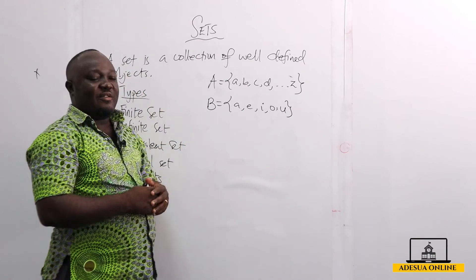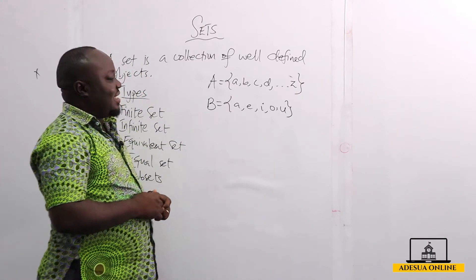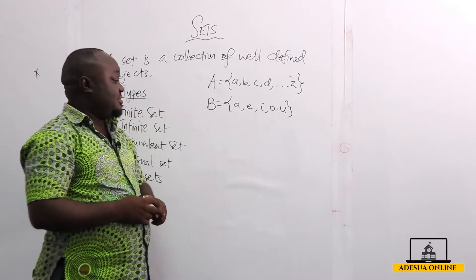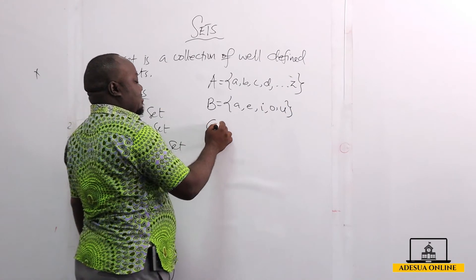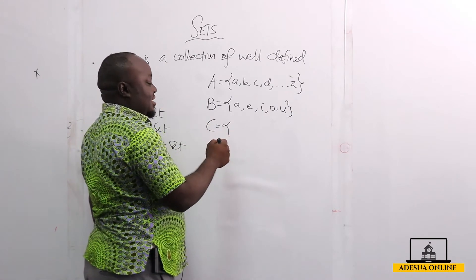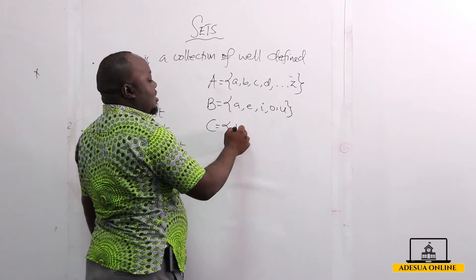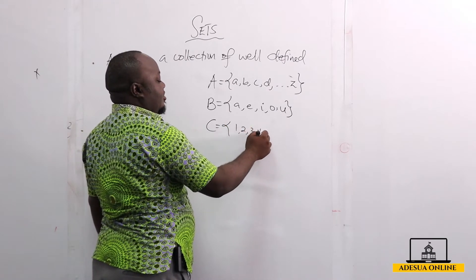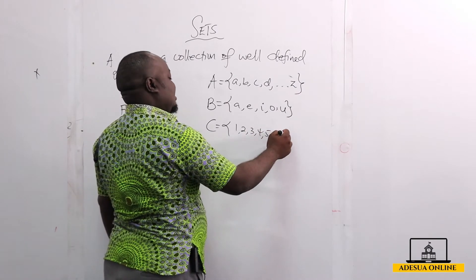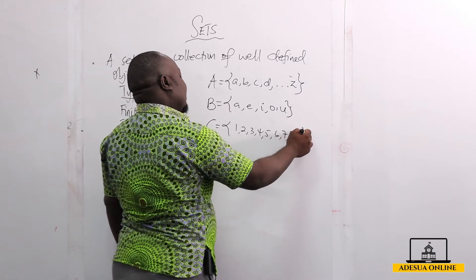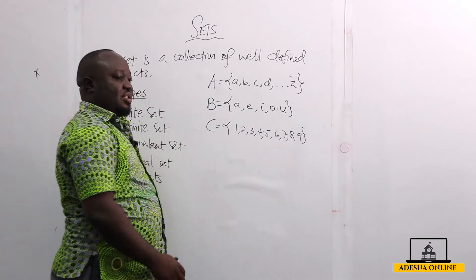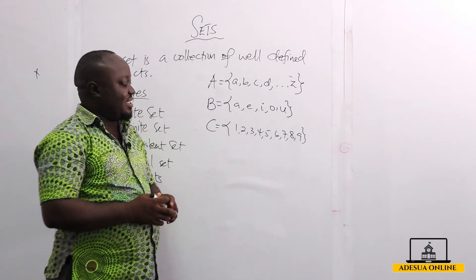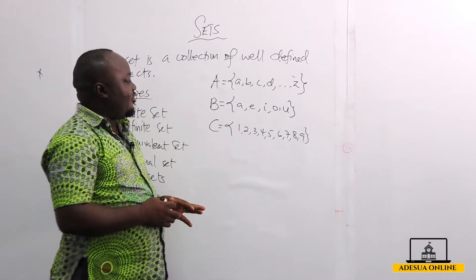If we want the set of natural numbers less than 10, we can represent it as 1, 2, 3, 4, 5, 6, 7, 8, and 9. So these are the set of natural numbers less than 10, and so on and so forth.